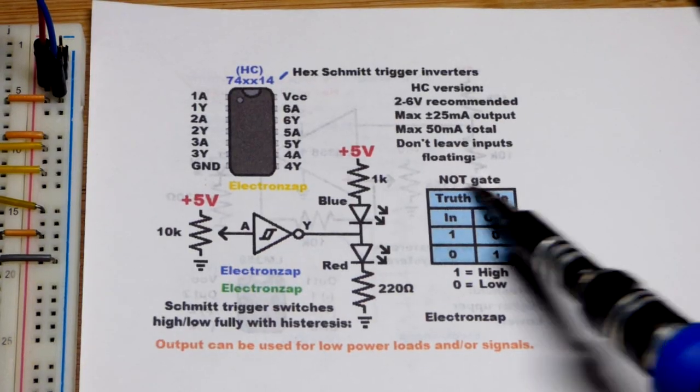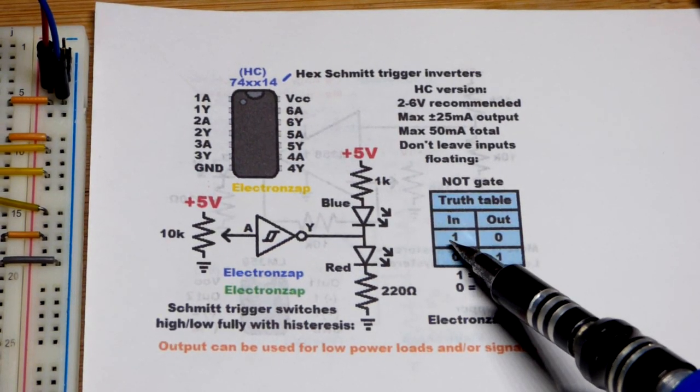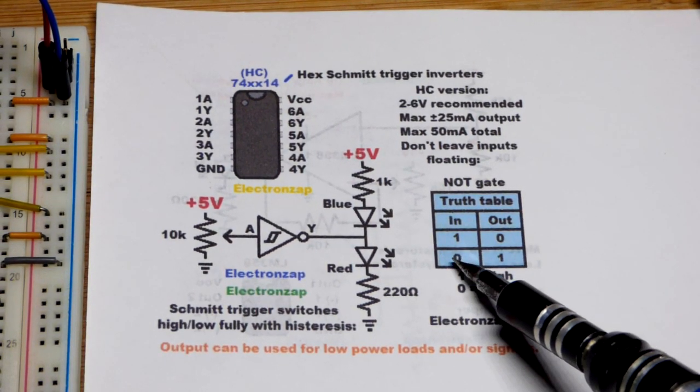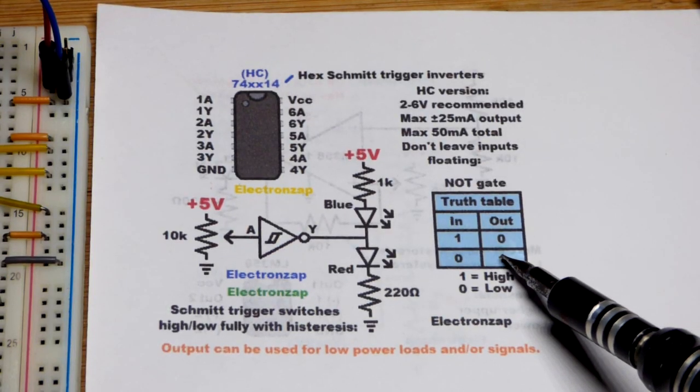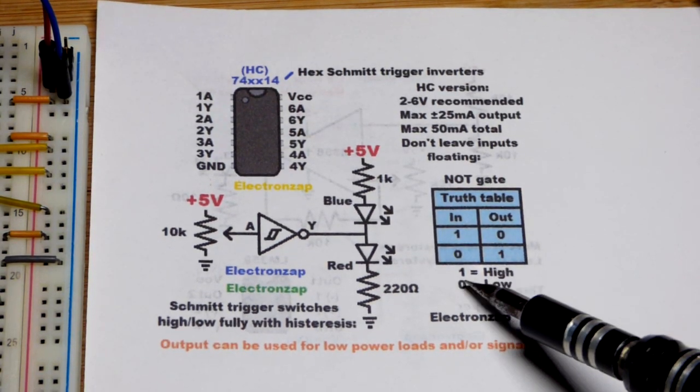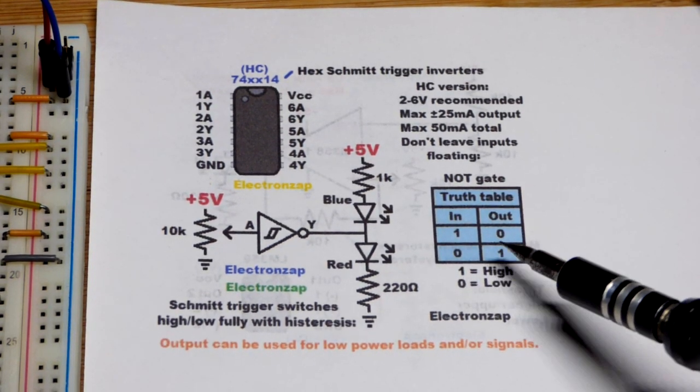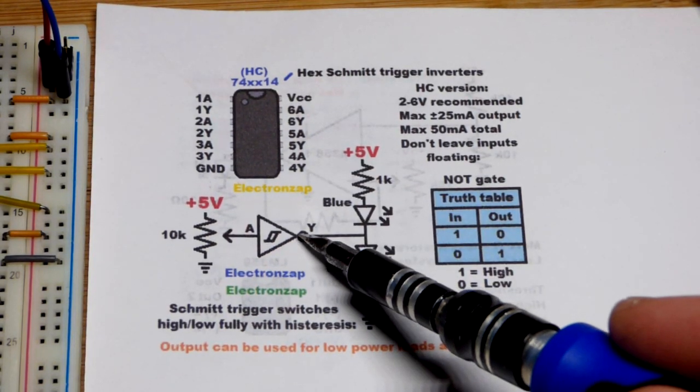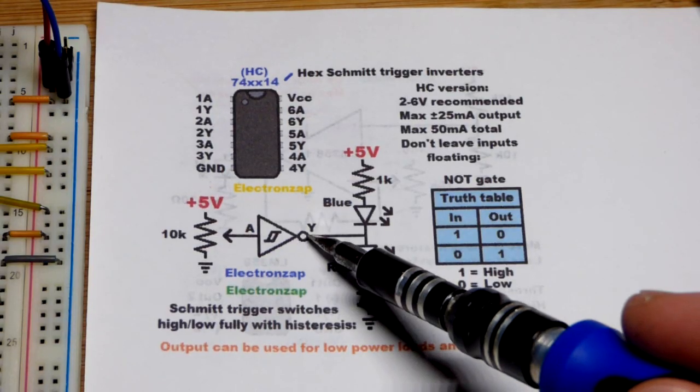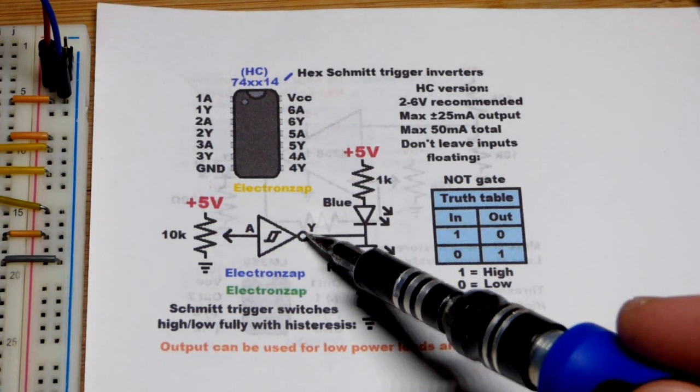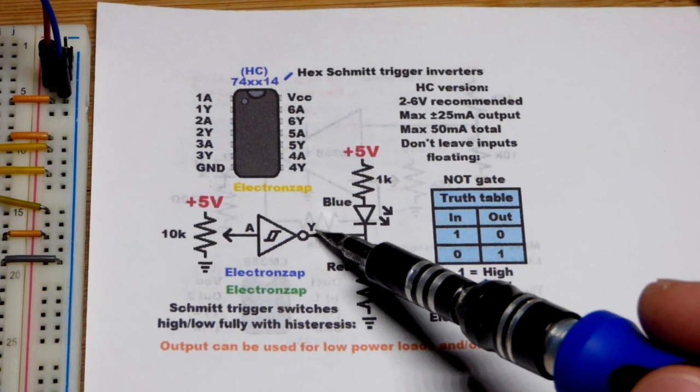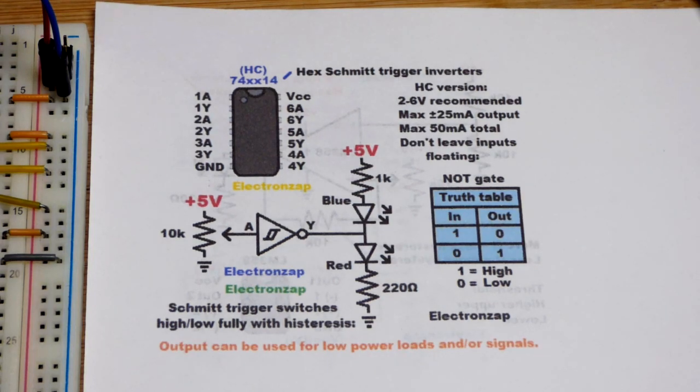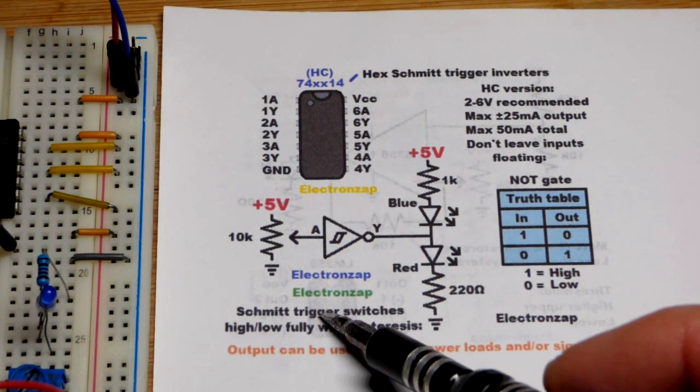That's the NOT gate there: higher input, low output; lower input, high output. These ones and zeros can mean many things. In this aspect, if the output is high, it's as close to five volts as the integrated circuit can get, and if it's low, it's as close to zero volts as the integrated circuit can get.